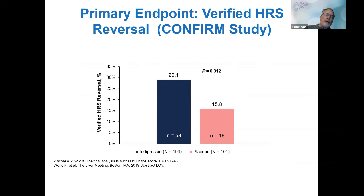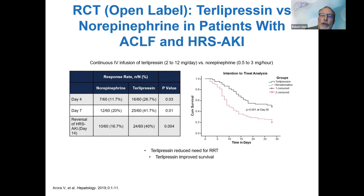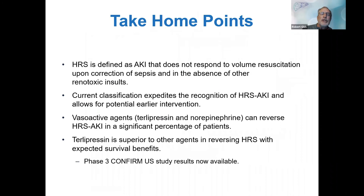Terlipressin versus placebo showed twice the number of patients achieving the primary endpoint with a very statistically significant p-value — this should have led to approval. A large number on the terlipressin arm developed pulmonary edema, but it looks like they were overdosed with albumin. There are GI side effects including abdominal pain, nausea, and diarrhea higher than placebo. Terlipressin versus norepinephrine: at 30 days terlipressin looks better, but other emerging data shows they look similar. HRS is AKI that does not respond to volume resuscitation after ruling out other causes of renal dysfunction.